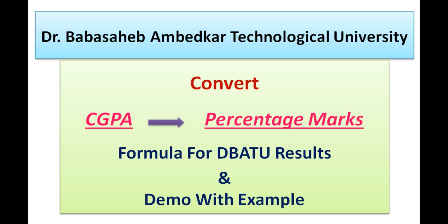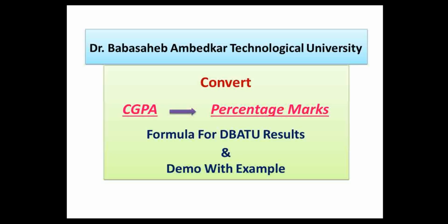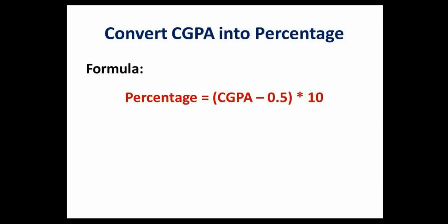Today I am going to show you how you can calculate the percent marks from CGPA grade points. When you pass out from one academic year and get admitted in the next academic year, students have to apply for scholarships. For some kinds of scholarships, percent marks are required to enter in the scholarship forms.